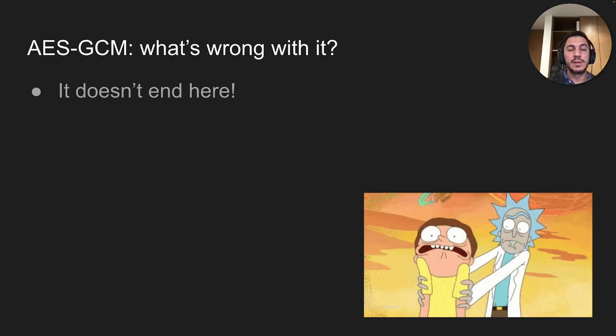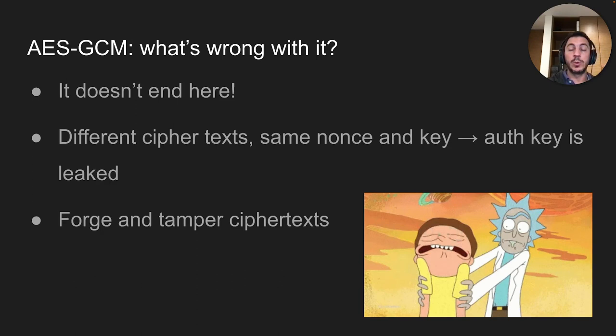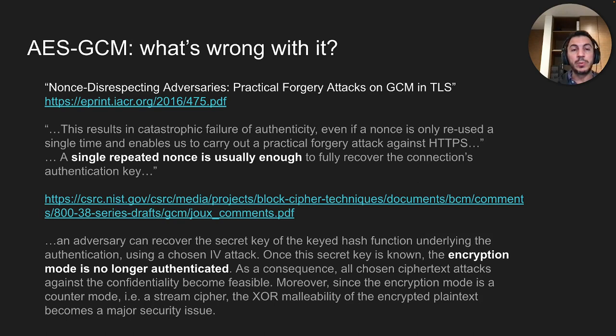It doesn't end there. When a nonce repeats, something else happens: the authentication key (H key) is leaked — the key used to create the GMAC authentication tag. If this happens, it allows you to forge and tamper with ciphertext. As cited from two papers — one on practical attacks on TLS — a single nonce repeat is usually enough to fully recover the connection authentication key, and the encryption mode is no longer authenticated. This is very bad.